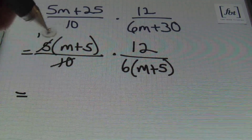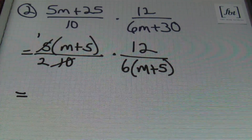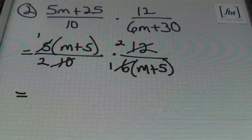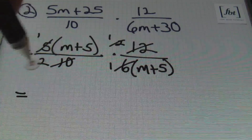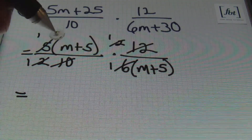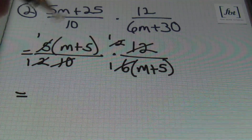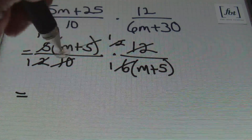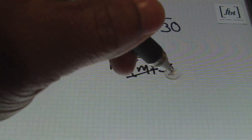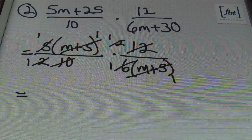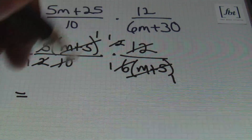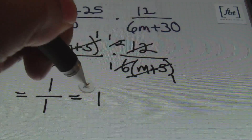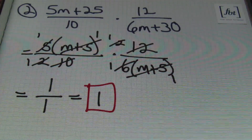Notice that 5 and 10 can be reduced by 5: 5 goes into itself once, 5 goes into 10 twice. And 6 goes into itself once and goes into 12 twice. Look at those 2s — going into themselves once and once. We also have m plus 5 in the numerator and in the denominator, so m plus 5 goes into itself once here and once there. Bottom line, we end up with 1 over 1, which is just 1. This problem was just 1.